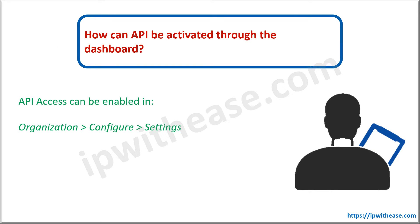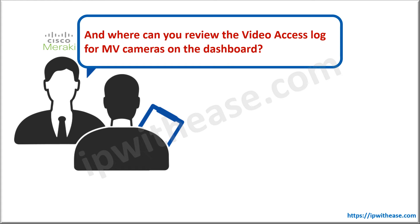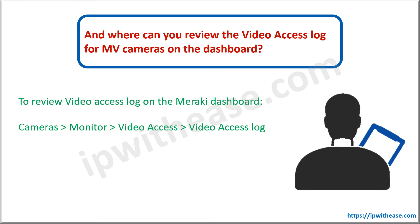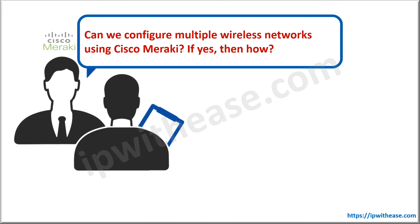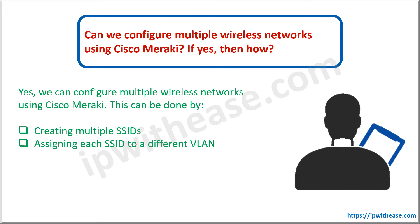How can the API be activated through the dashboard? It can be enabled in Organization, then Configure, then Settings. To review the video access log for MV cameras on the Meraki dashboard, you navigate to Cameras, then Monitor, then Video Access, and then Video Access Log.